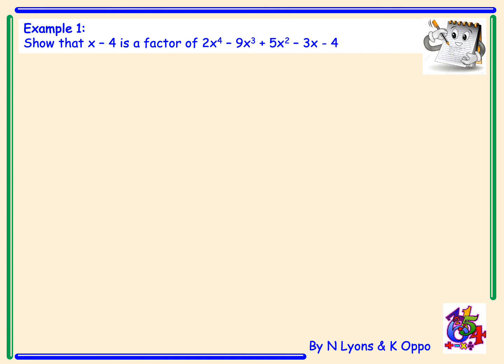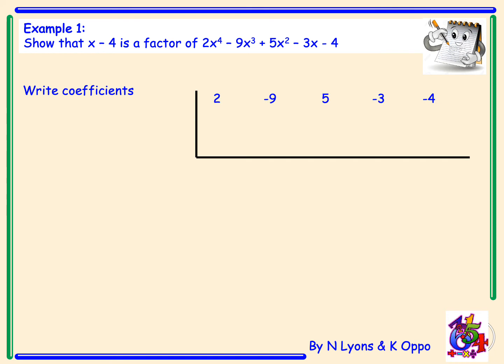Example 1. Show that x - 4 is a factor of 2x⁴ - 9x³ + 5x² - 3x - 4. First, write down the coefficients of the polynomial: 2, -9, 5, -3, and -4.